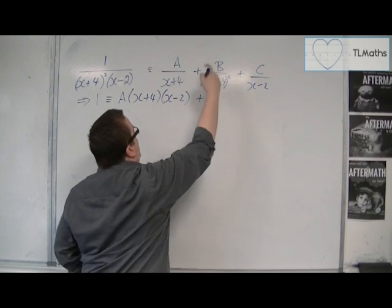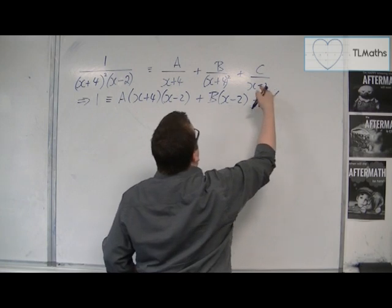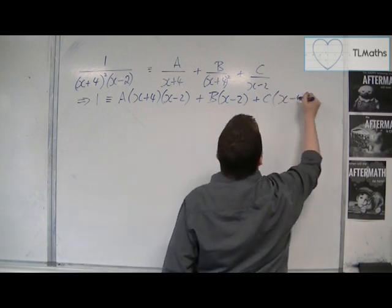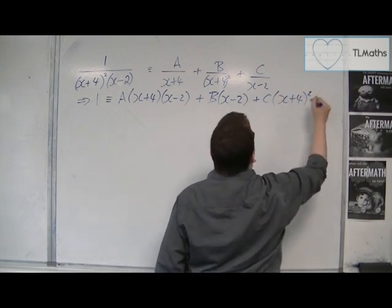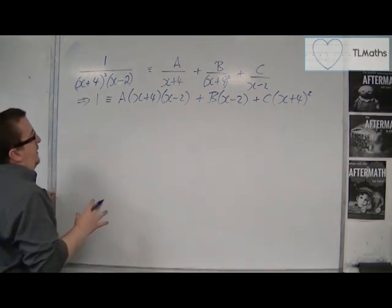Now the b, that's got the x plus 4 squared, so it just needs x minus 2. And the c needs x plus 4 squared.